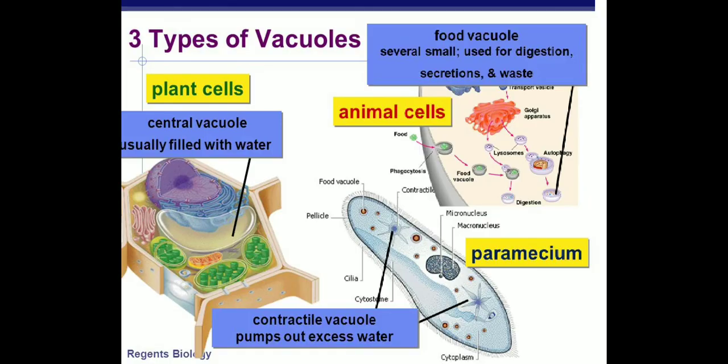Vacuoles are of three types. First, in plant cells, the central vacuole is usually filled with water and other substances required for the plant. Second, in animal cells, the food vacuole — for example, amoeba creates pseudopodia to make a food vacuole and engulf food; several small food particles are engulfed into the vacuole and then used for digestion, secretion, and waste removal.